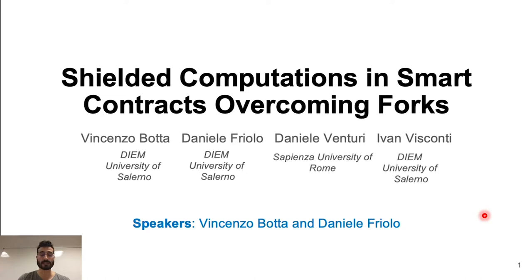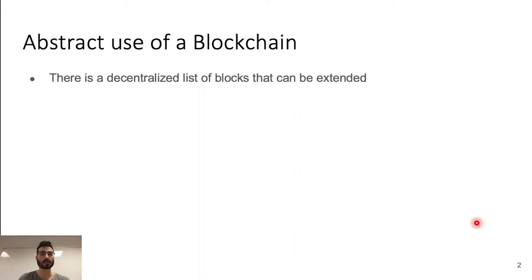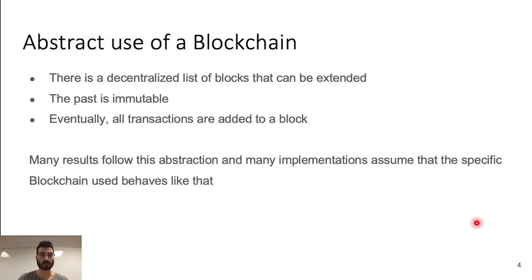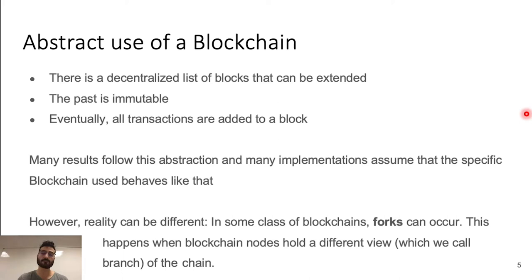Let's start with an introduction of a common abstraction of blockchains. A blockchain is modeled in general as a decentralized list of blocks that can be extended. The past is immutable and eventually all transactions are added to a block. Many results follow these abstractions and many implementations assume that the specific blockchain used behaves like that. However, reality can be different. For example, in some class of blockchains, forks can occur.